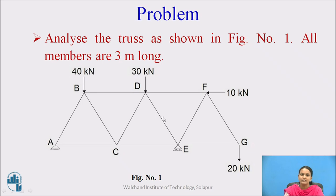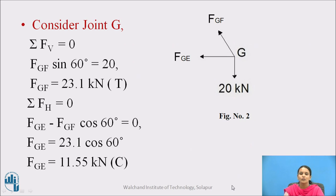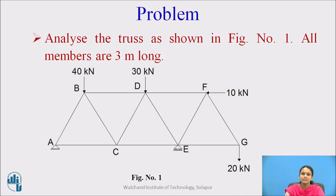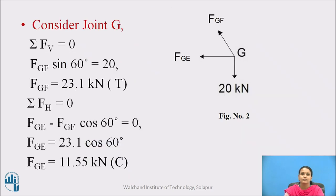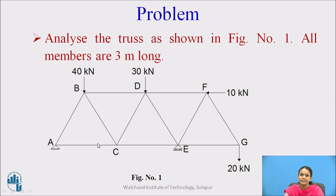The figure shows a pin-jointed truss having all members of 3 meters long, and these are the external forces. Before going to further calculations, we have to consider the assumptions made in the analysis — the internal forces of these members are negligible. So we are considering only external forces and will proceed with the analysis. Observing the entire truss, we have to find the joint that has only two unknowns.